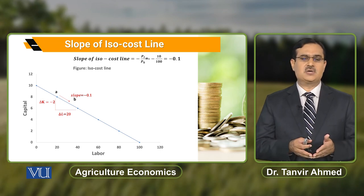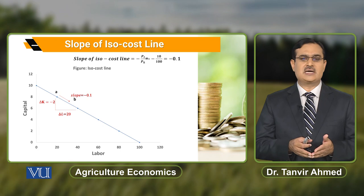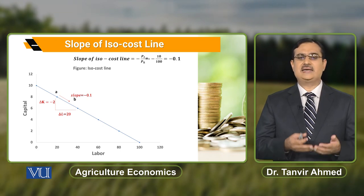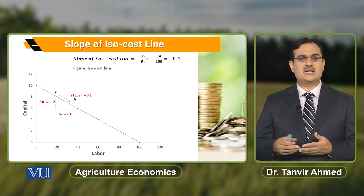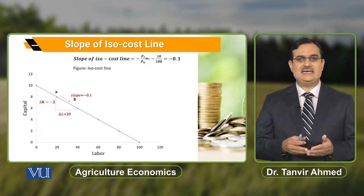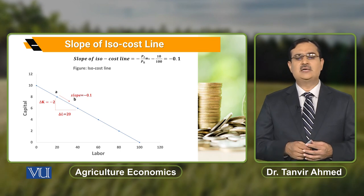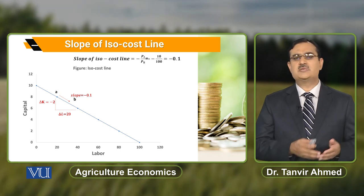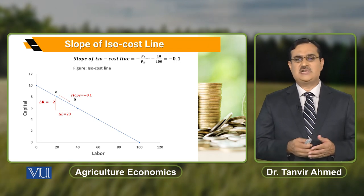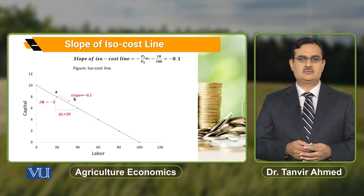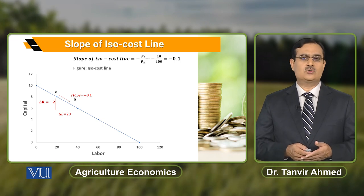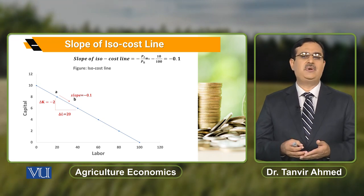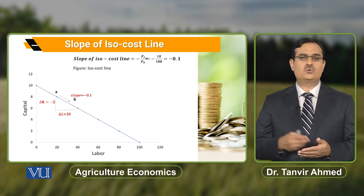Farmer is changing the purchase of capital and labor by moving from point A to point B. इस case में change in capital is minus two units — there is a decrease in purchase of capital by two units — and there is an increase in purchase of labor by twenty units. Slope is change in vertical over change in horizontal, which comes out to be minus 0.1.